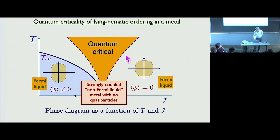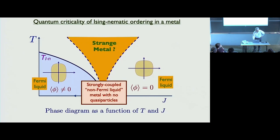A lot of effort has been extended to understand this critical point, and it has been correctly understood that it's a strongly coupled non-Fermi liquid. There's a sharp Fermi surface in momentum space, although not in energy space, so even though there's a Fermi surface there are no quasi-particles — the excitations are very broad in energy. The question really is what happens to this non-Fermi liquid at finite temperature: is it a strange metal?